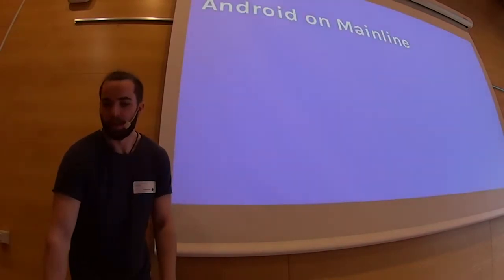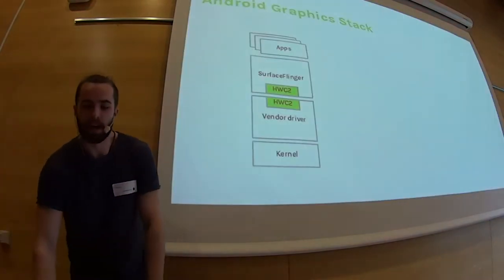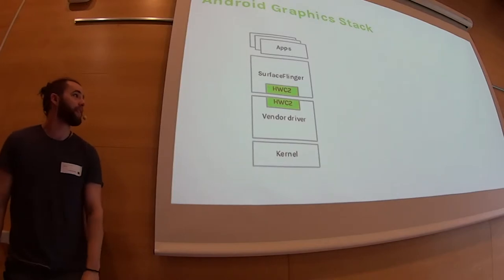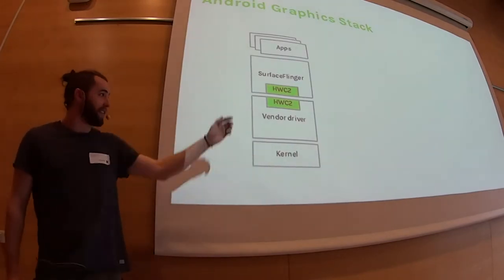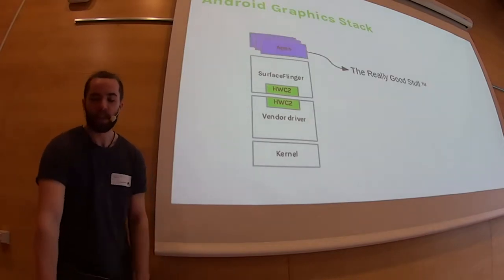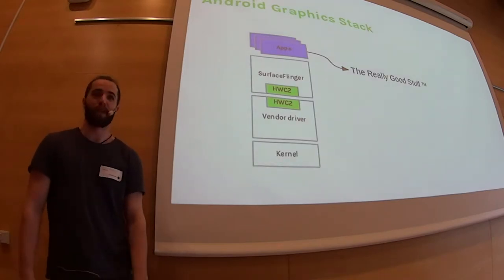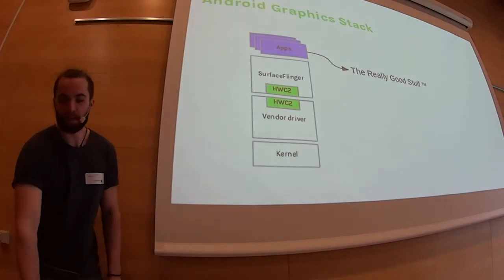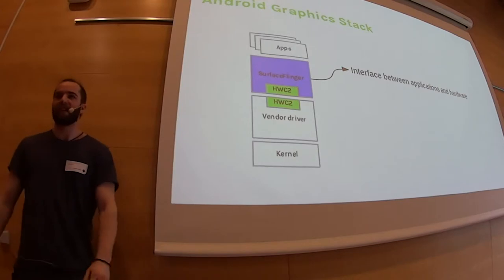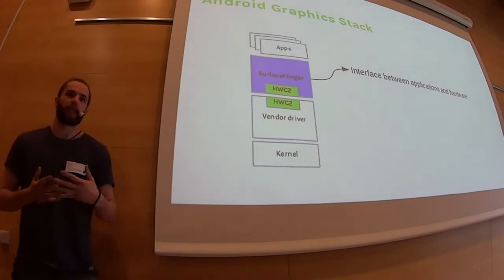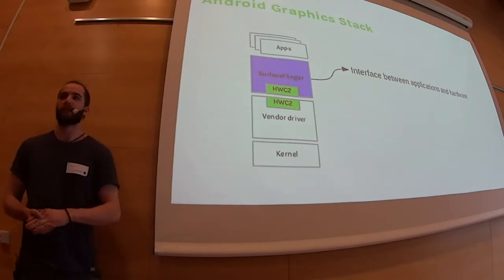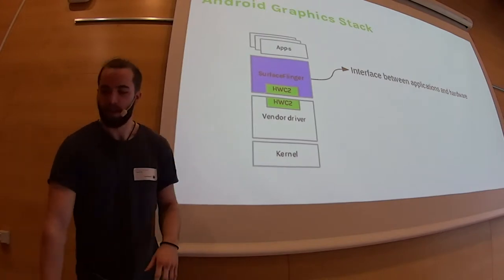That brings us to what the Android graphics stack actually looks like. It's not so complicated — or this is a little simplified, but all the important parts are here. On top we have the apps — that's the goal. Below we have SurfaceFlinger, which is sort of a glue component. It allows all the applications to render into basically a single buffer, which means applications don't really have to be aware of each other.